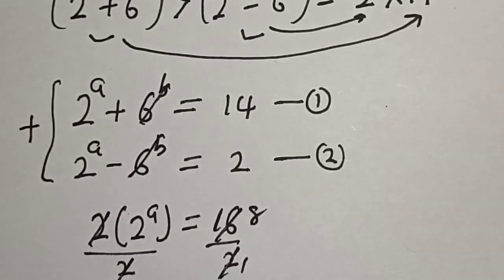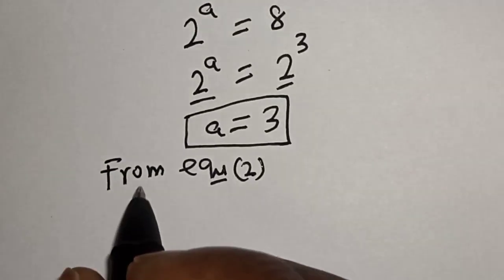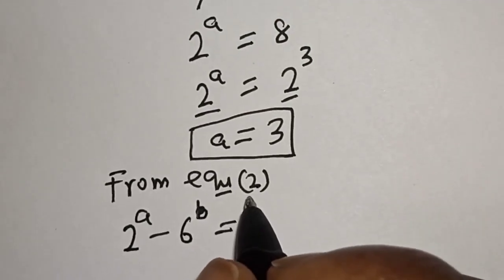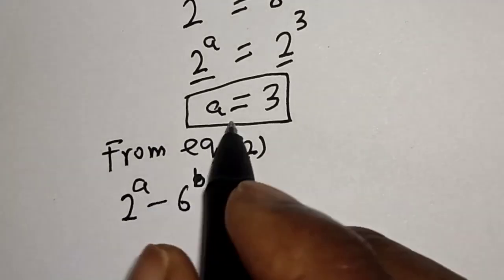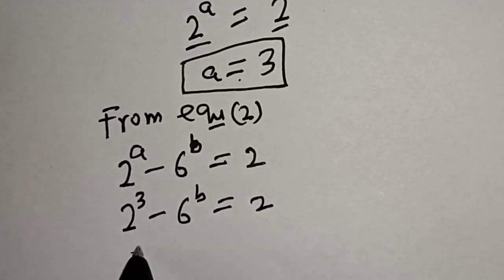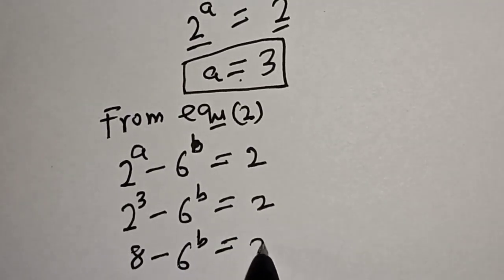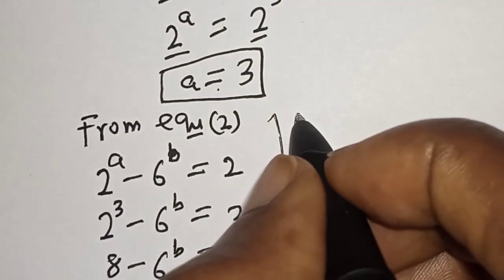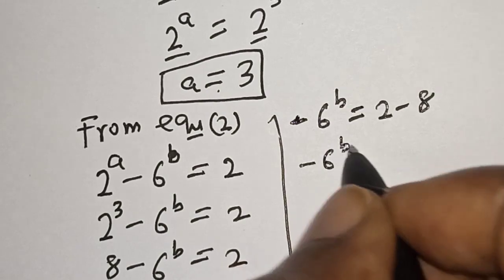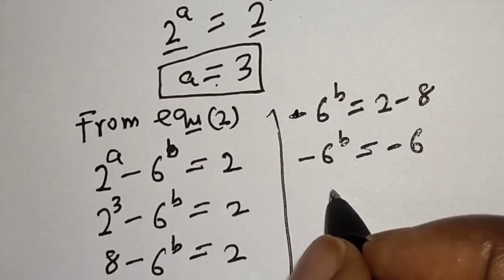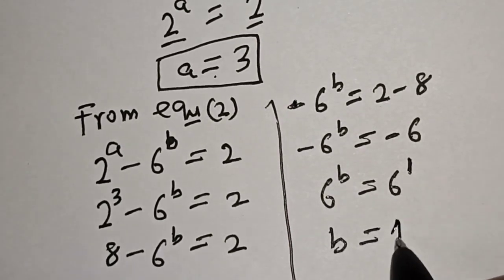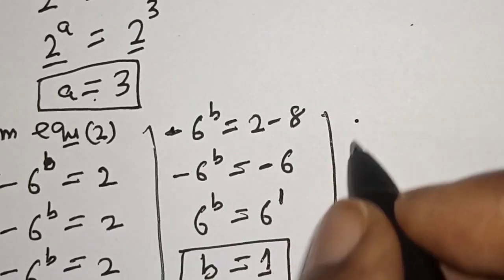We can solve for b from equation 2: 2 raised to power a minus 6 raised to power b equals 2. Substituting a equals 3, we get 2 raised to power 3 minus 6 to the power of b equals 2. Since 2 to the power of 3 is 8, we have 8 minus 6 to the power of b equals 2, so minus 6 to the power of b equals 2 minus 8, which is minus 6. Therefore 6 to the power of b equals 6, which equals 6 to the power of 1, so b equals 1.